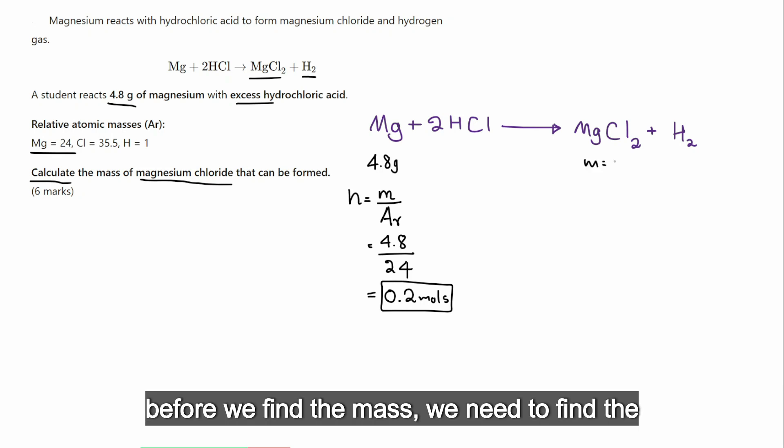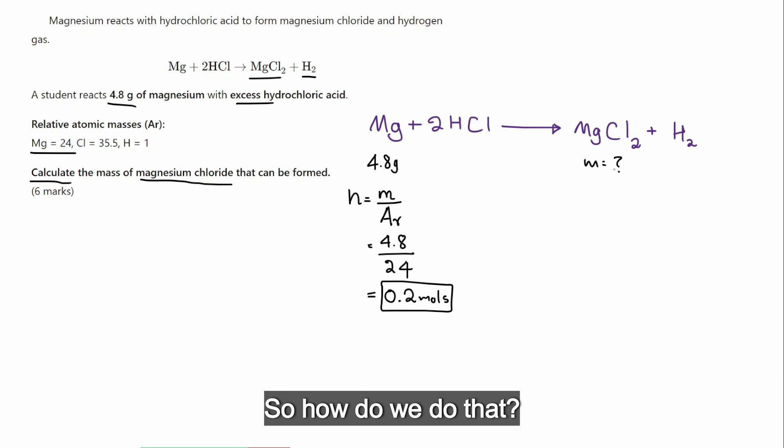Now, before we find the mass, we need to find the number of moles. So, how do we do that? We need to look at the molar ratio. Now, magnesium is 1. Magnesium chloride is 1 because if there's no number at the front, that means it's 1. It's like 1x is the same as x. So, we can clearly see the molar ratio is 1 to 1.